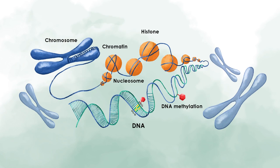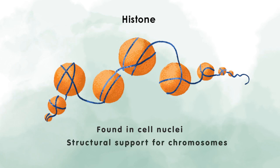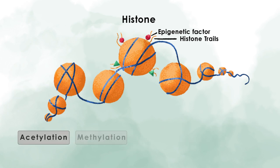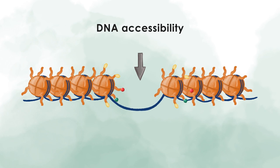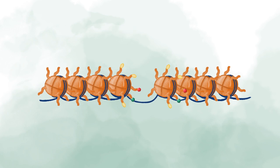Other classical epigenetic mechanisms are histone modifications. Histones are proteins found in eukaryotic cell nuclei, and their main function is to provide structural support for the chromosomes. Here, not the DNA gets modified, but the proteins where the DNA is wrapped around. These modifications include acetylation, methylation, phosphorylation, and ubiquitination. When these modifications are present on the proteins, the DNA is either better or less accessible, and thereby gene expression is altered.